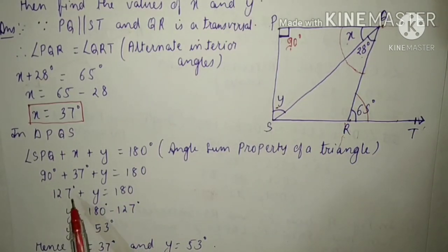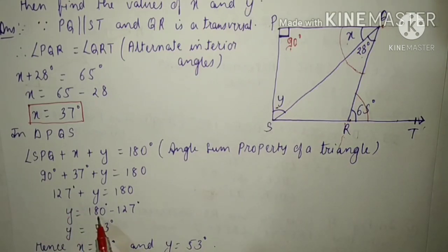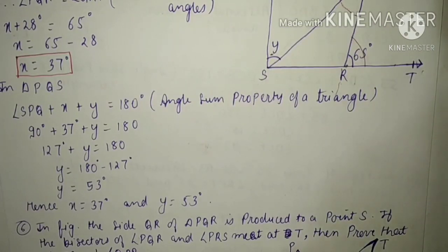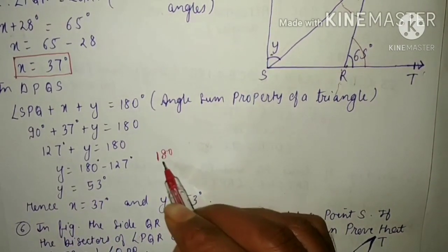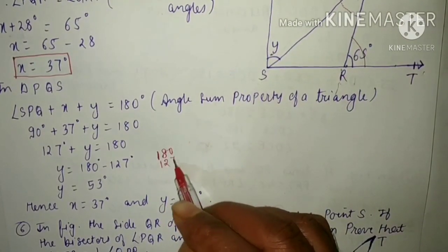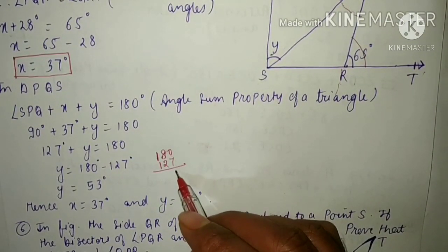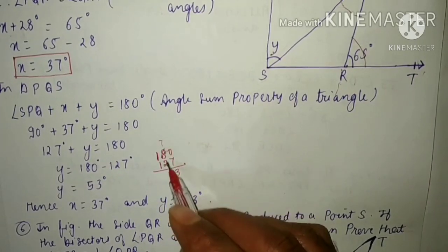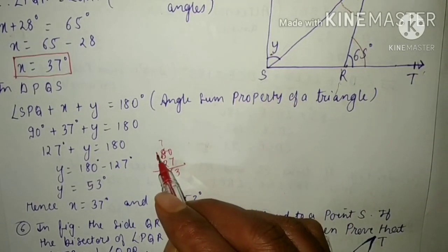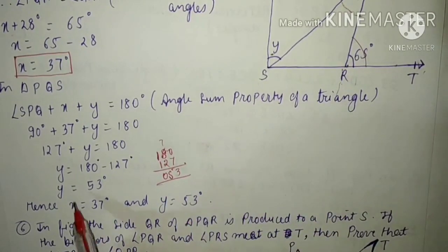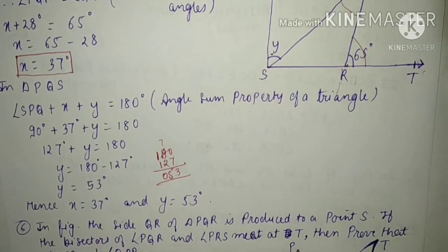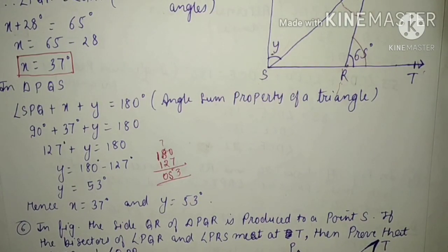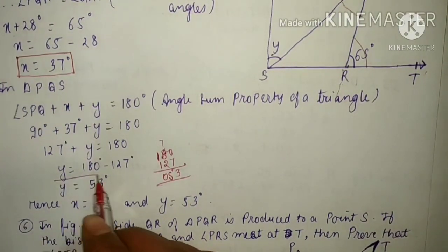Transposing 127 to the right-hand side, Y equals 180 minus 127 degrees. Computing: 180 minus 127 — 10 minus 7 is 3, 7 minus 2 is 5, giving 53 degrees. So Y equals 53 degrees.